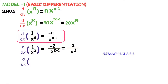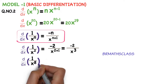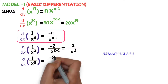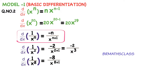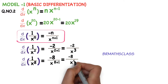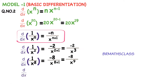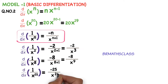Similarly, take one more problem: the derivative of 1 divided by x power 8. Compare this with 1 by x power n — the answer is minus 8 divided by x power 8 plus 1, that is minus 8 divided by x power 9. So the derivative of 1 by x power 8 is minus 8 divided by x power 9. This we can write directly. Now for 1 divided by x power 25, we can write the answer directly: minus 25 divided by x power 26. We use this formula very frequently while doing differentiation problems.